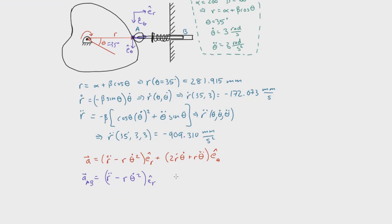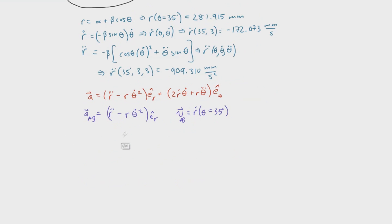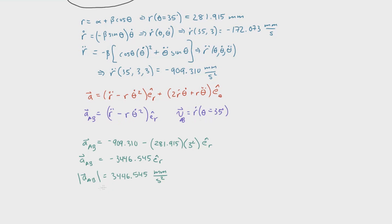The acceleration of AB is simply the radial component: r-double-dot minus r times theta-dot squared in the eᵣ direction. It does not have an eθ component because rod AB cannot rotate with the cam due to the constraint. Similarly, the velocity of AB is just r-dot, since r-dot captures only the radial velocity with no rotational tendency. Therefore the velocity of AB at theta equals 35 degrees equals negative 172.073 mm/s in the eᵣ direction, with a magnitude of 172.073 millimeters per second.